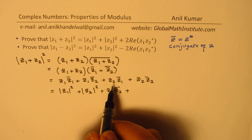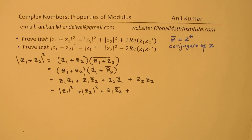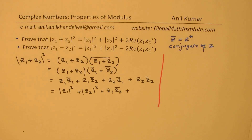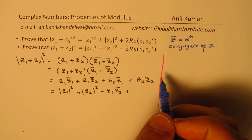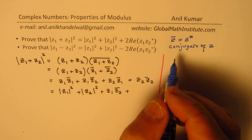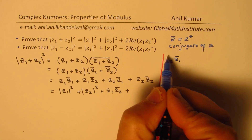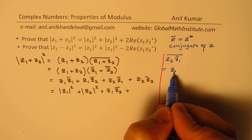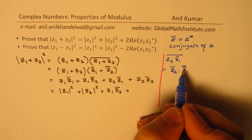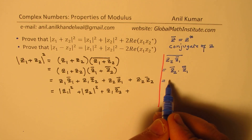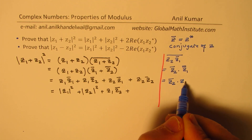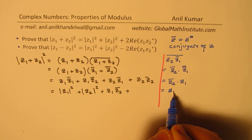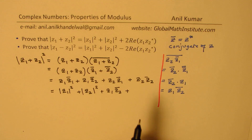Let's see how to rewrite z2·z̄1. We'll divide this section of the page for simplicity and clarity. We check what z2·z̄1 conjugate equals. That equals z̄2 times the conjugate of conjugate of z1. Since the conjugate of a conjugate is the complex number itself, we get z̄2·z1, which is the same as z1·z̄2.